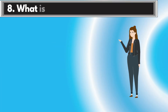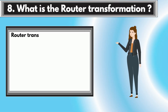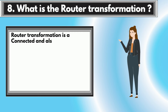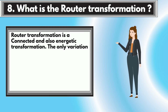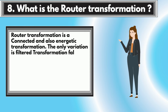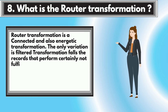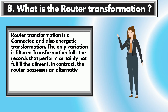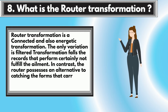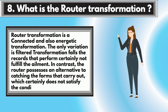Question 8: What is the Router Transformation? Router Transformation is a connected and also active transformation. The variation from filter transformation is that filter transformation drops the records that do not fulfill the condition, whereas the router has an alternative to catching the rows that do not satisfy the condition.